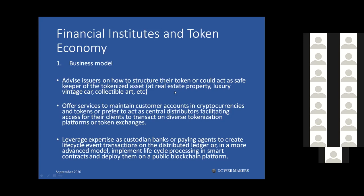On the business model: you need to figure out how you want to structure your token and who is going to act as the custodian or safe keeper when the token is issued. An important example — if you're tokenizing fine art and selling tokens to 100 people, who is in custody of the physical asset? Buyers need assurance that there is a good insurance company covering the physical asset and someone taking care of it.